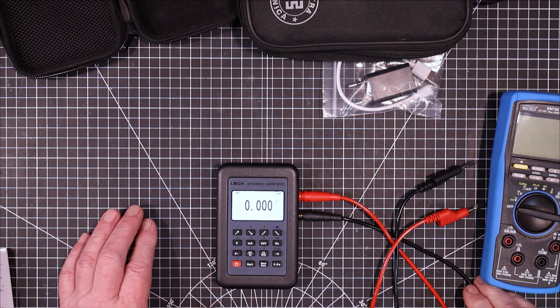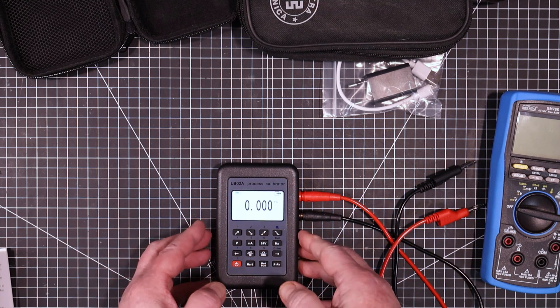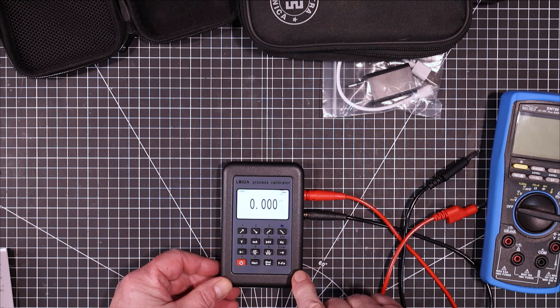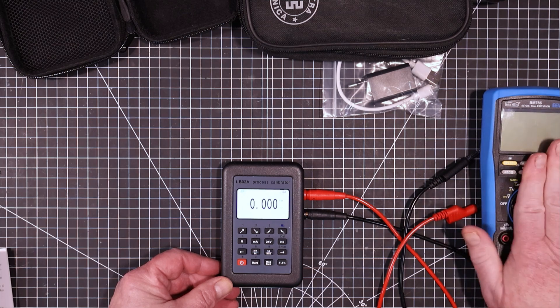So that is the LB02A process calibrator. I think it's going to come in very handy when I have to test multimeters here on the bench. I'm going to be using this in the future. Because we've seen how accurate it is. With this four and a half digit meter here. It's a very accurate meter.